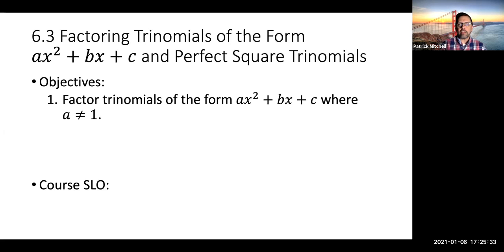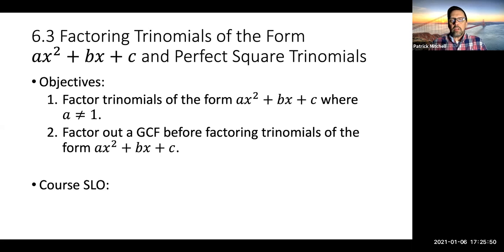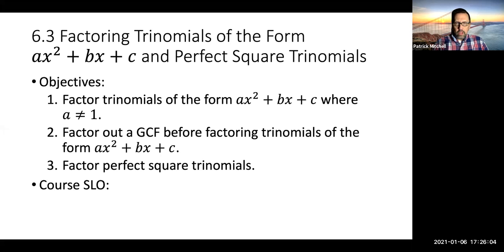Remember in the last section, we factored trinomials of the form x² + bx + c, which is the same as ax² + bx + c where a does equal 1. And then we're going to do the same thing, except with factoring out a GCF first. Remember, we always look for a GCF as the very first thing. Then we'll end with looking at factoring perfect square trinomials.